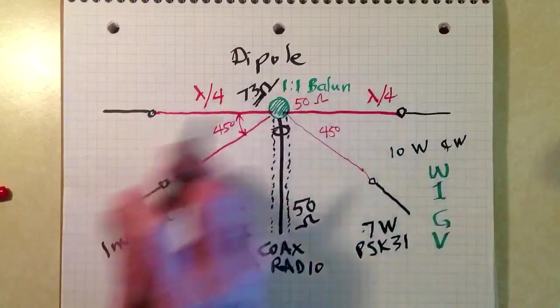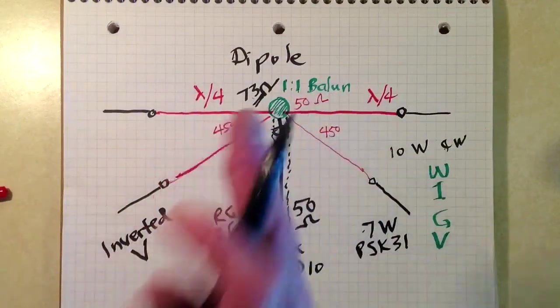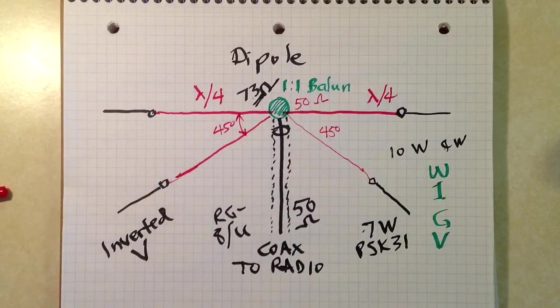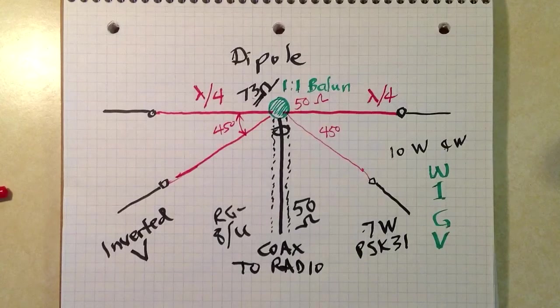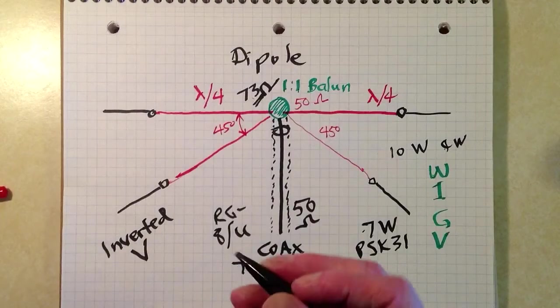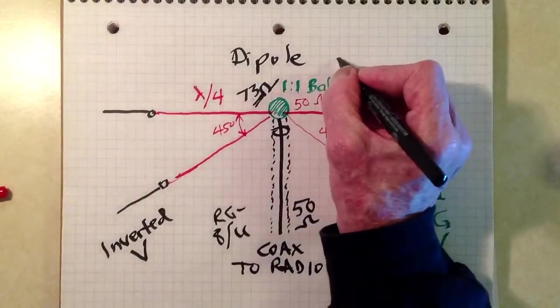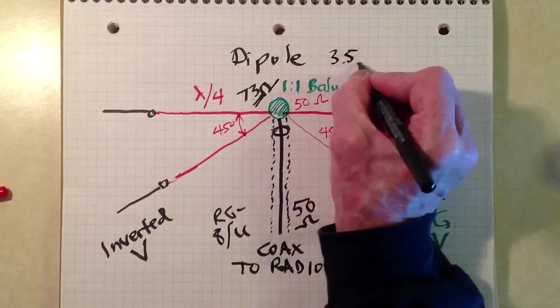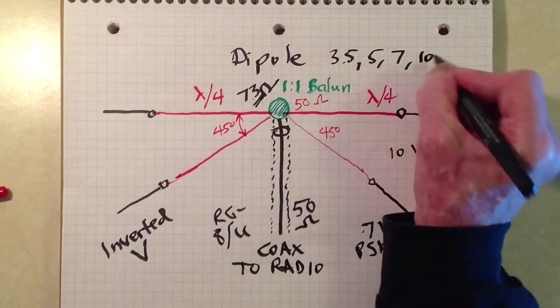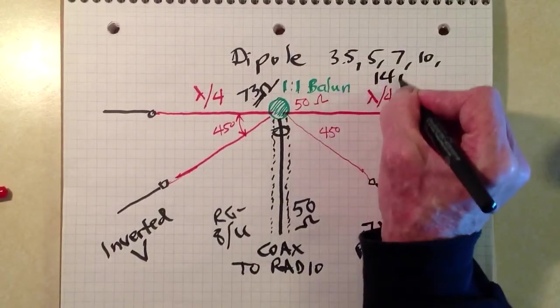Off the ends, it will be vertically polarized. Off the sides, horizontally or more or less horizontally polarized. But that's rarely a concern at the frequencies that you're likely to use this type of antenna, which would be 3.5, 5, 7, 10, maybe 14 megahertz.